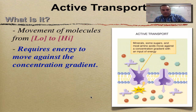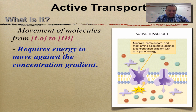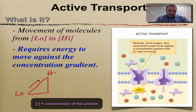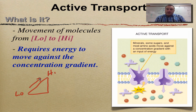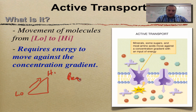Active transport is just the opposite. This one requires energy because you're going uphill. So you're moving from an area of low concentration to an area of high. Just like when you're on that sled at the bottom of the hill, done with your run, and now you've got to walk back up — that can be tiring because you're going up against gravity. You have to spend some energy to get up that hill. Same thing here.